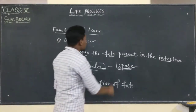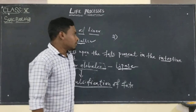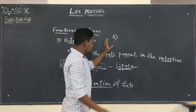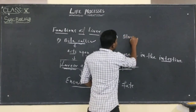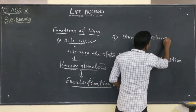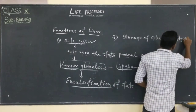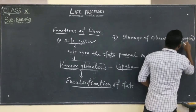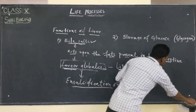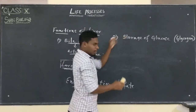The second function of liver is the storage of glucose. Liver helps to store glucose in the form of glycogen.